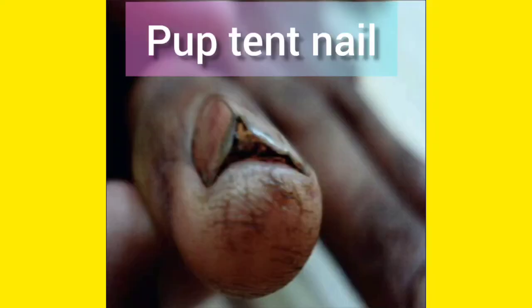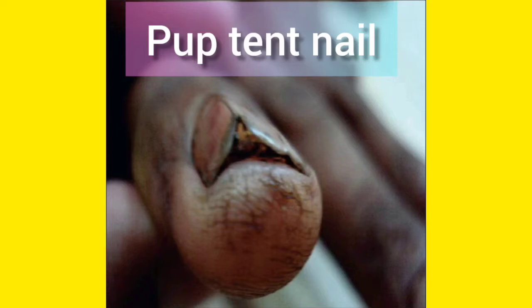Another nail manifestation is the 'pop tent' appearance. The nail becomes tented — shaped just like a tent. This is known as the pop tent appearance of Lichen Planus nails. So the two nail features so far are: pterygium and pop tent appearance.